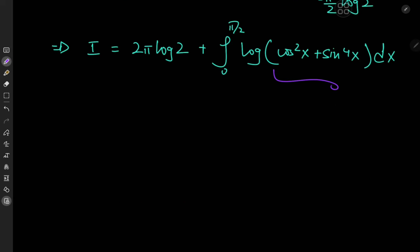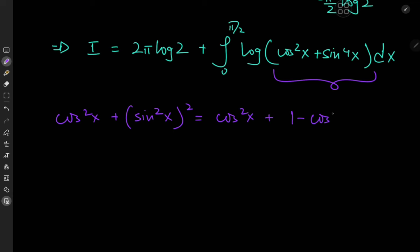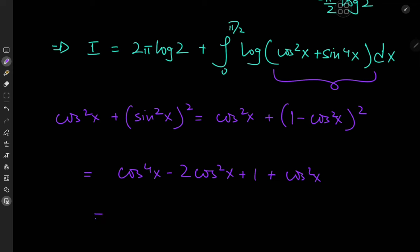Now let's play around with the new argument we have for the logarithm function. We have cos²x plus sin⁴x, which can be written as cos²x plus (sin²x)². Expanding sin²x as 1 minus cos²x gives cos²x plus (1 minus cos²x)², and on expanding the square we ultimately get cos⁴x minus cos²x plus 1.